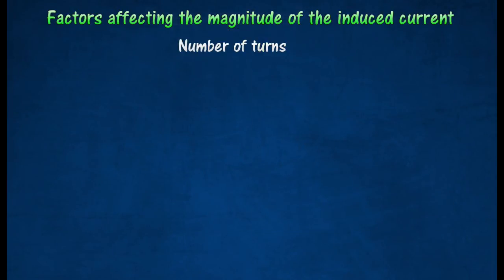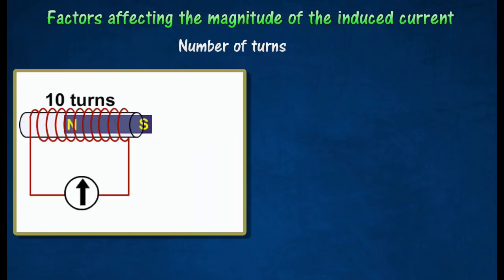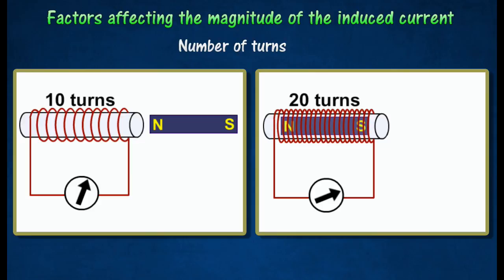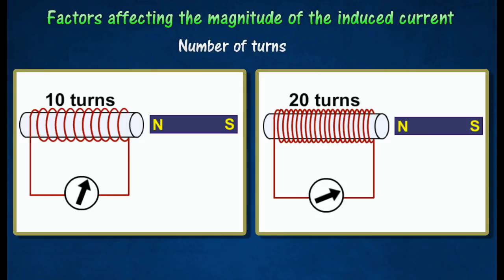Increasing the number of turns on the solenoid will increase the induced current. For example, the galvanometer shows a larger deflection when the magnet is moved slowly into a solenoid of 20 turns compared to 10 turns. This shows a larger current is induced in the solenoid.